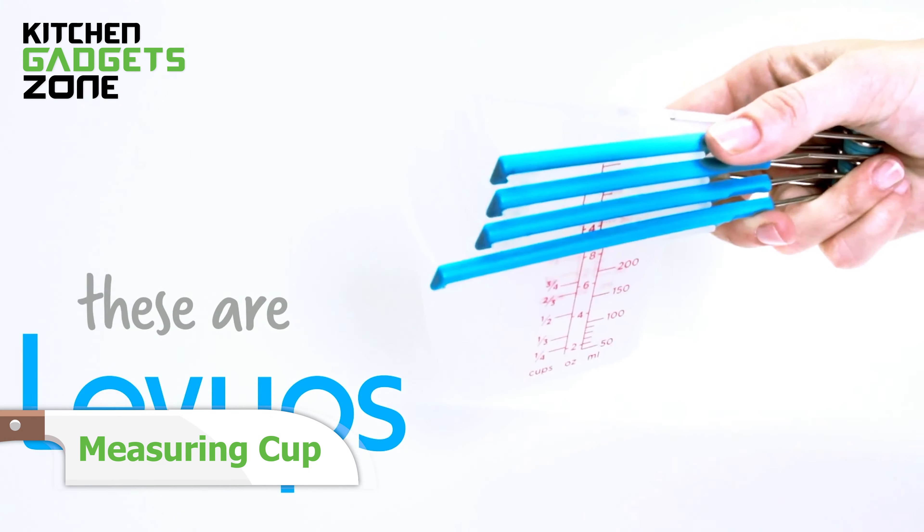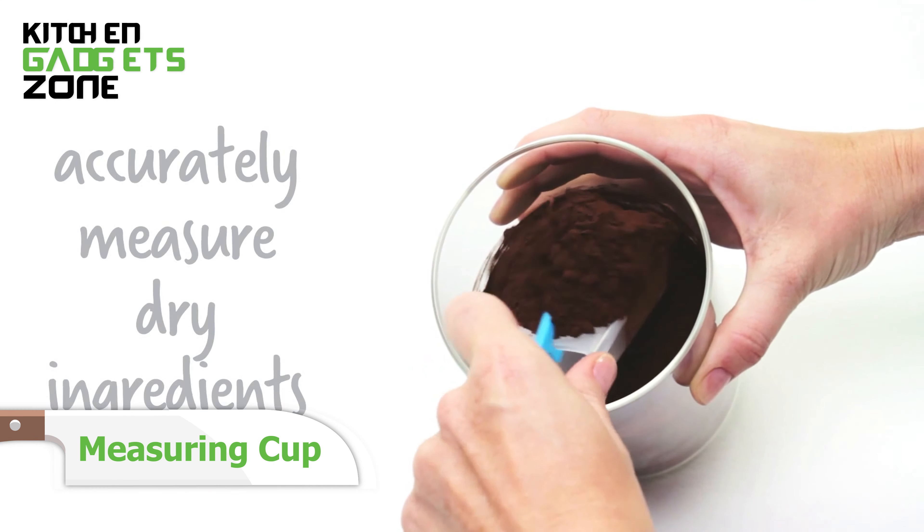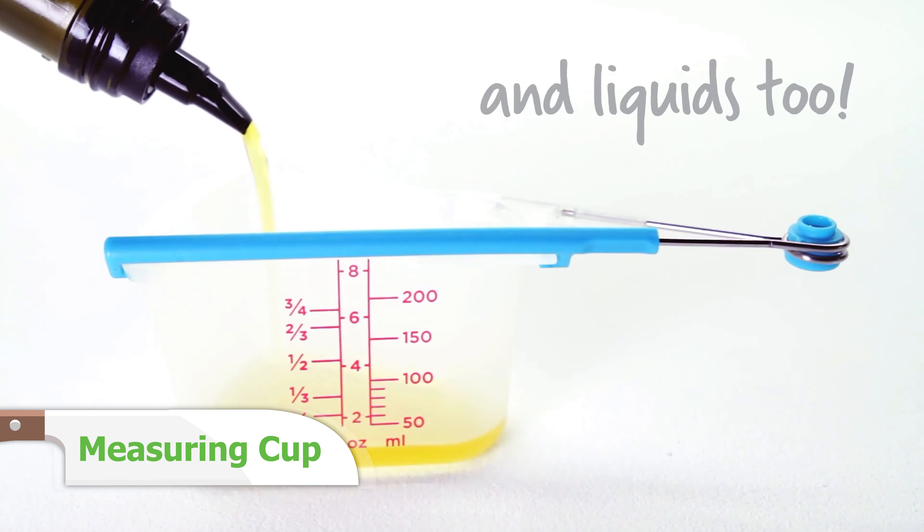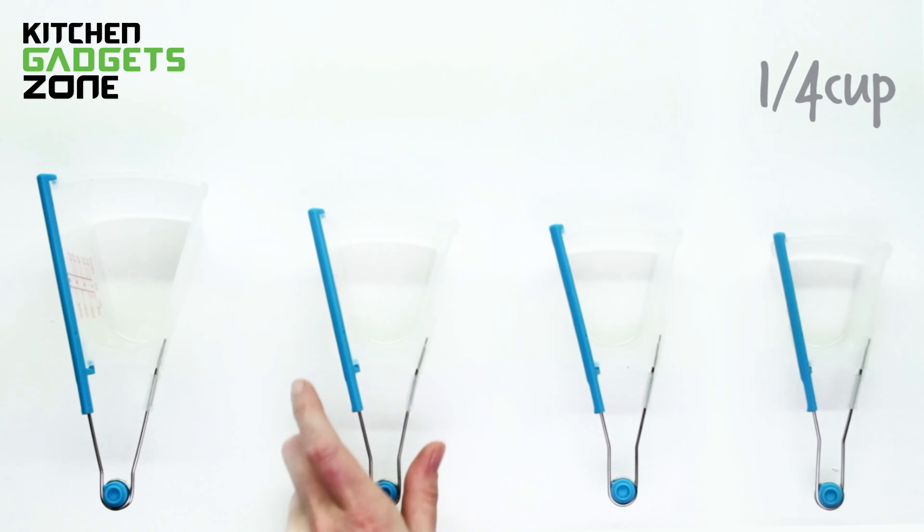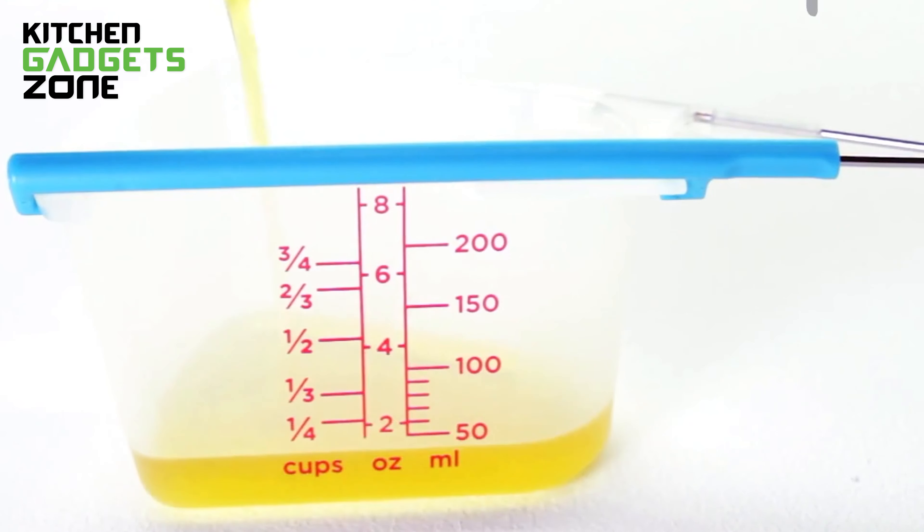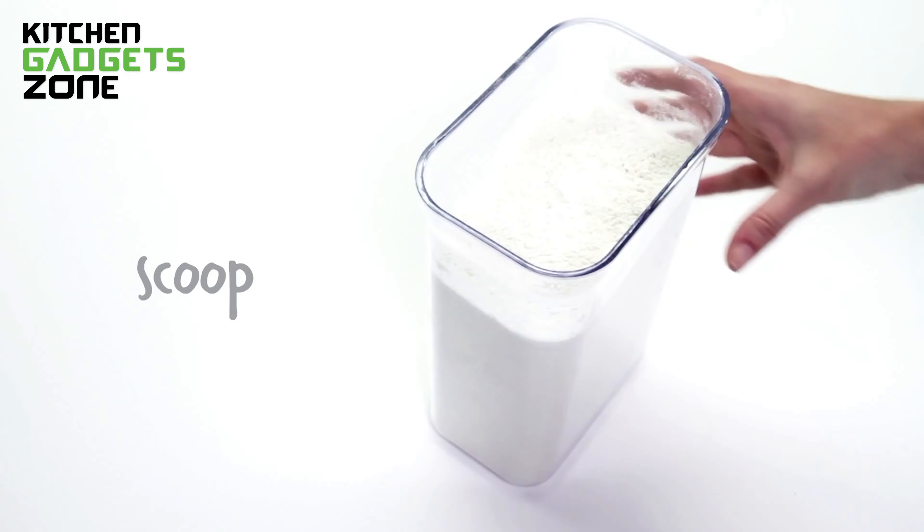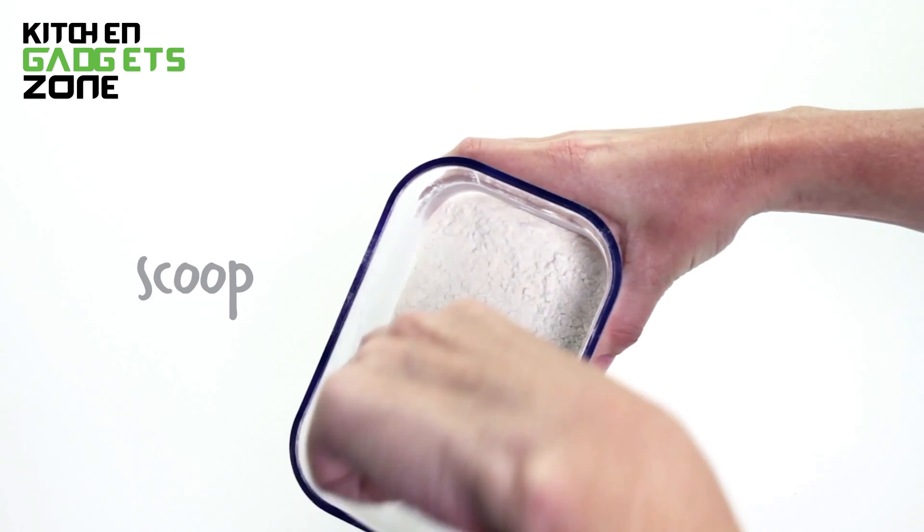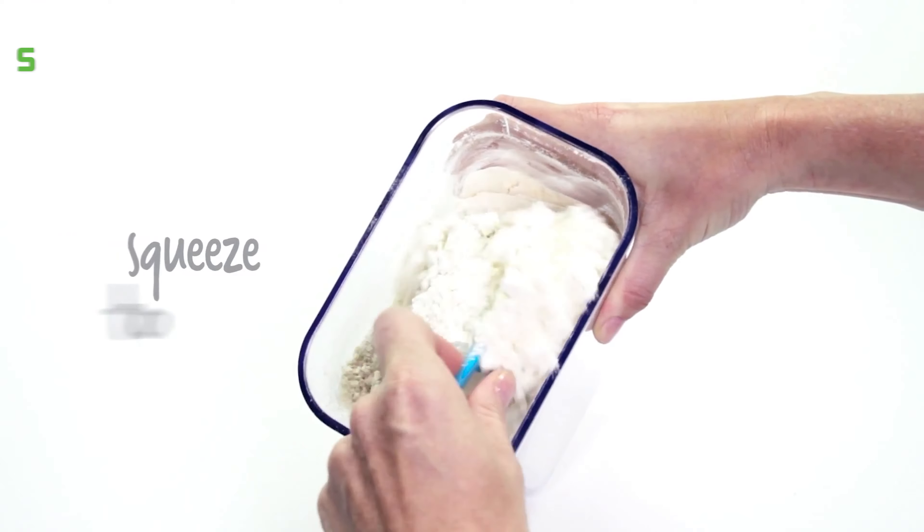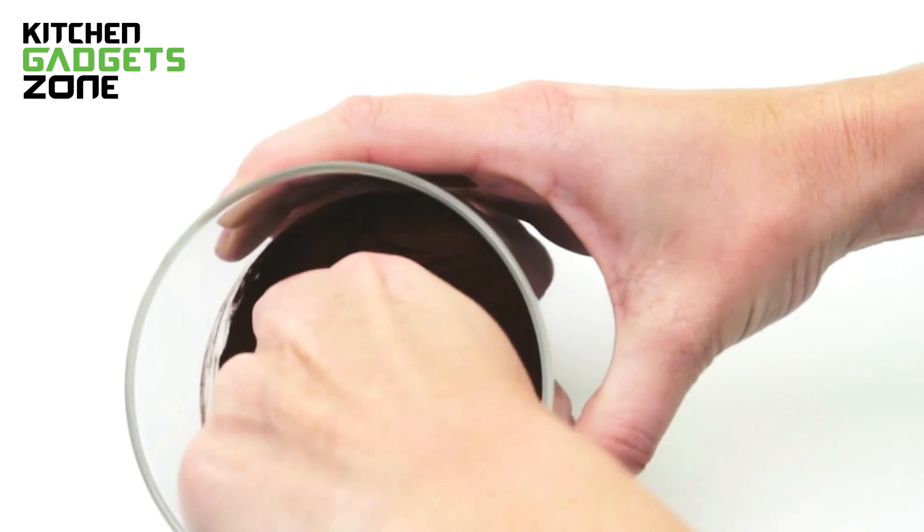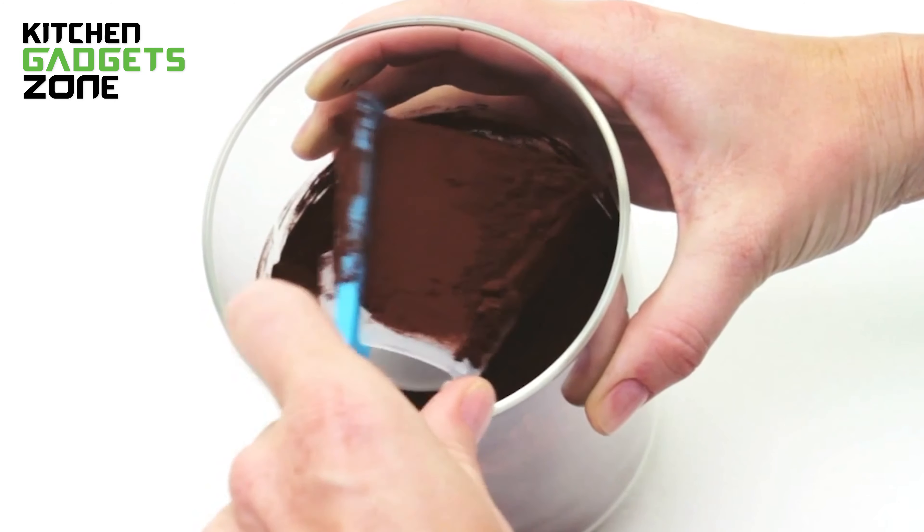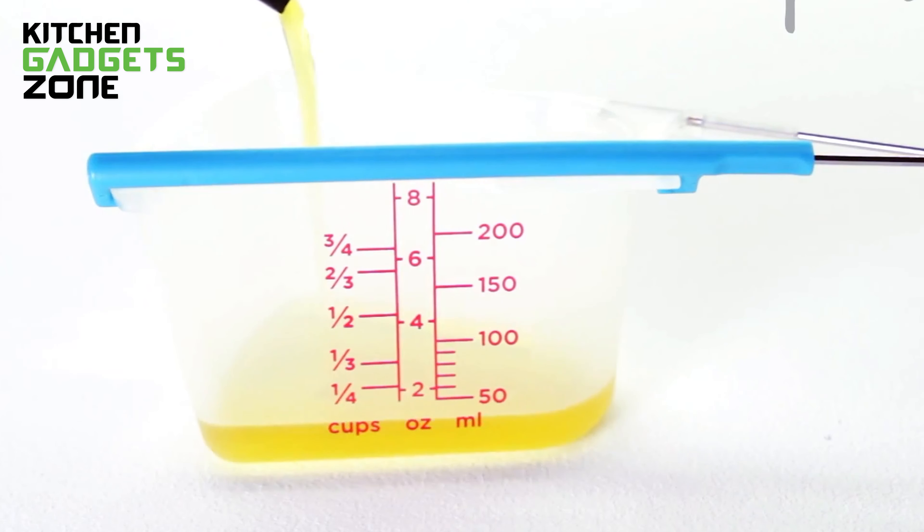Measuring ingredients has never been easier with leave-ups. These incredible leveling measuring cups are perfect for both dry and liquid ingredients. Each leave-up is clearly marked with cup, ounce, and milliliter lines, making it a breeze to accurately measure liquids. Simply squeeze the handles together, and the built-in scraper swipes across the top, pushing off any excess for a perfectly level and accurate measurement every time. No more overflowing or under-filled cups.